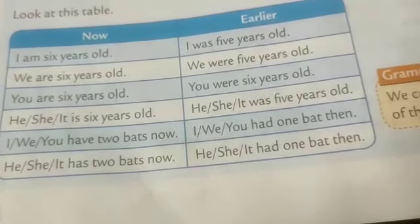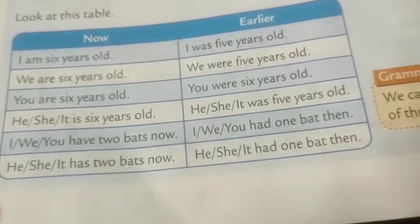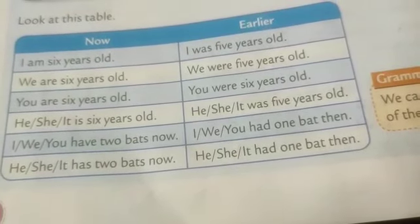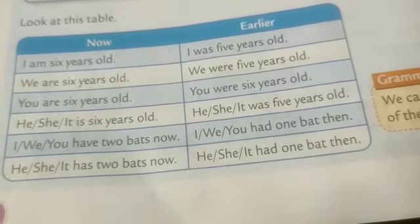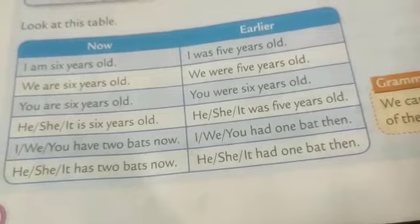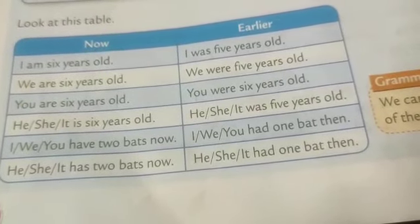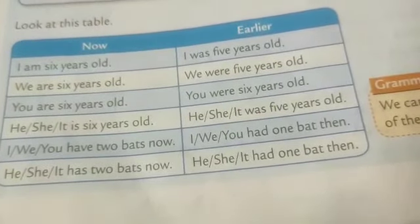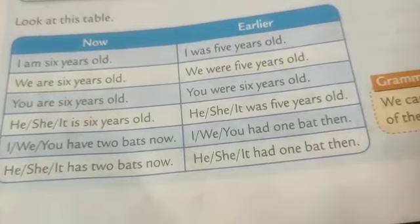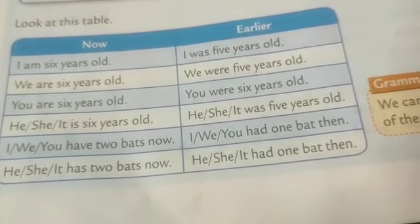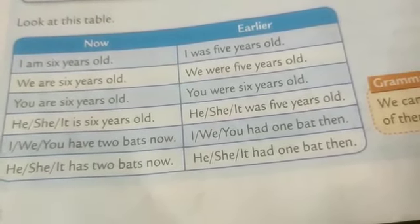In the first box, that shows 'now,' and the second box shows 'earlier.' Now means present time; earlier means past time. I am 6 years old — now. I was 5 years old — past. We are 6 years old; we were 5 years old. You are 6 years old; you were 6 years old.